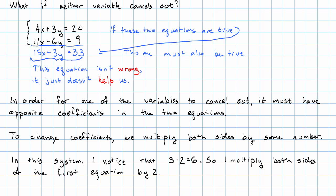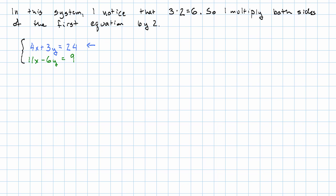In this system, I see that 3 times 2 is 6, so that means that if I multiply the first equation on both sides by 2, my coefficients of y will be opposite. So I start with this system. I'm going to manipulate this equation. I multiply both sides by 2. When I distribute, I'll get 8x plus 6y is 2 times 24 is 48. And so now instead of my original system, I have manipulated the first equation. So the first equation is now 8x plus 6y is 48.